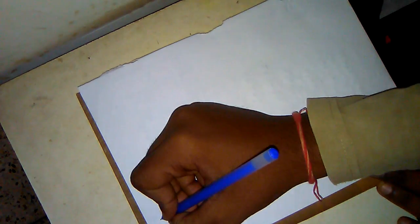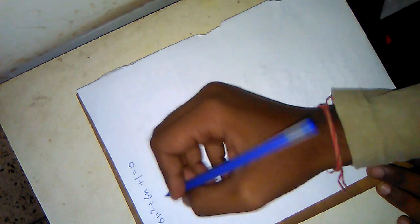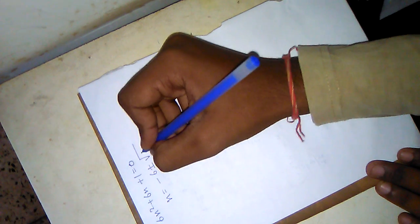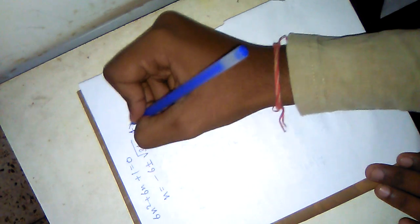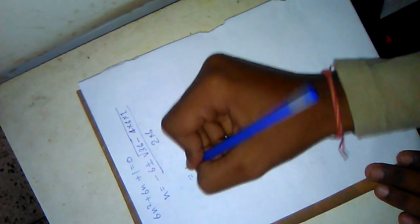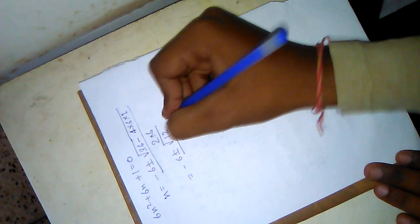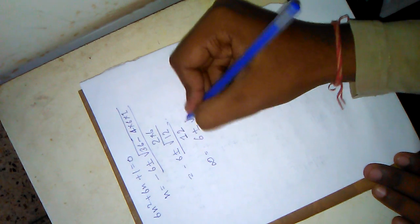Now we can use the Sridharacharya method. With six n squared plus six n plus one equals zero, n equals minus six plus minus root over six squared, which is 36, minus four times six times one, all by two times six. This equals minus six plus minus root over 12 by 12. So we proved that infinity is equal to minus six plus minus root over 12 by 12.